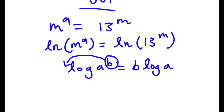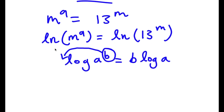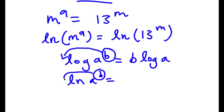This would equal b times log a, and this property is known as the power property. And because ln, the natural log, is also a logarithm, if I have ln of a to the power of b, this is equal to b times ln a — I can move my exponent to the front.